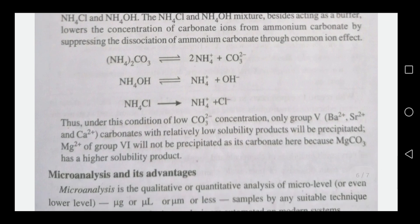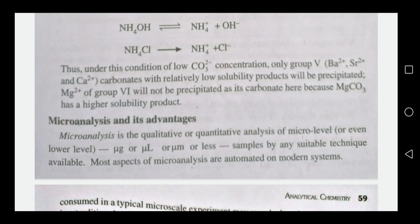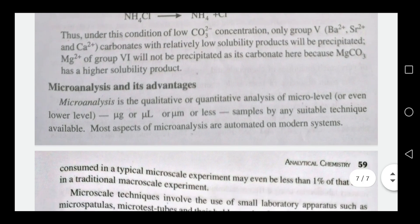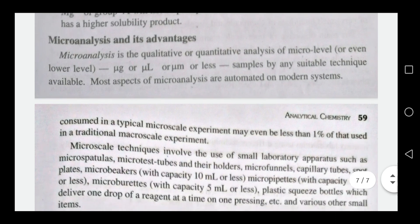Under this condition of low carbonate ion concentration, only group 5 cations — barium, strontium, and calcium — which have low solubility products precipitate, while those with high solubility products do not. Thank you.